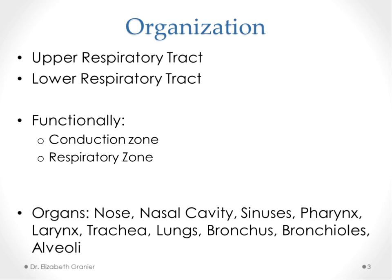For the anatomy, we structurally divide the tract into upper and lower respiratory tracts, with the larynx as the division point. Everything below the larynx is the lower respiratory tract; everything above is the upper. Depending on the book, the larynx is sometimes considered part of the upper, sometimes part of the lower. Functionally, where oxygen diffuses into the blood is the respiratory zone, and everything above that — not allowing gas diffusion — is part of the conduction zone, a network of pipes to get oxygen to the tissues.